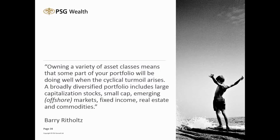There's a quote from Barry Rifflet — a commentator on CNBC, author, and newspaper columnist. He says: only a variety of asset classes means that some part of your portfolio will be doing well when cyclical turmoil arises. A broadly diversified portfolio includes large capitalization stocks (big blue chip shares), small caps, emerging markets, fixed income, real estate, and commodities — and I'd add offshore exposure to that list.